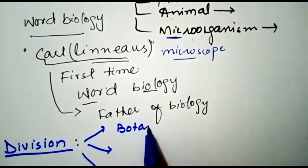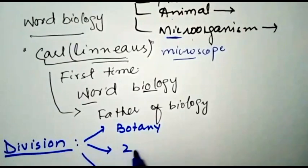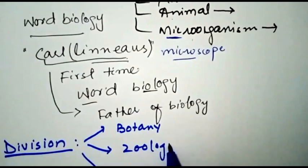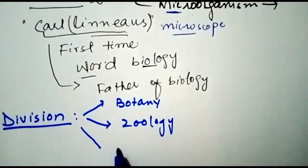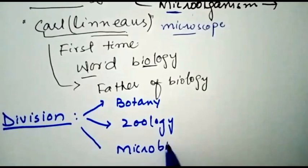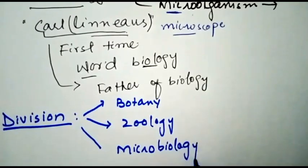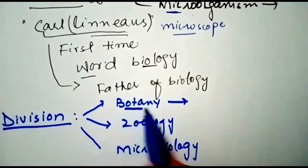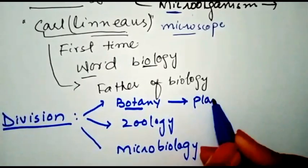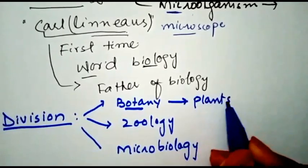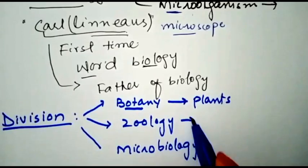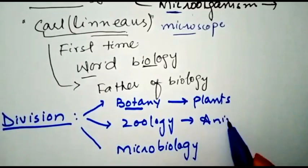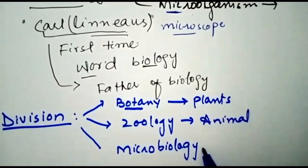The main divisions of biology are botany, zoology, and microbiology. Botany is the study of plants. Zoology is the study of animals. Microbiology is the study of microorganisms.